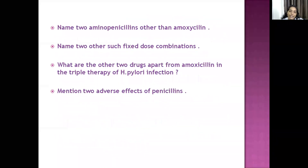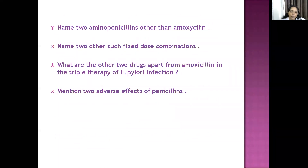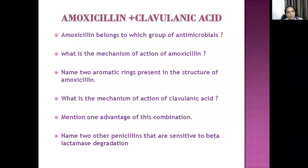Additional homework questions: name two other amino-penicillins apart from amoxicillin; name two other fixed-dose combinations like amoxicillin and clavulanic acid; what are the other two drugs apart from amoxicillin in the triple therapy of H. pylori infection; mention two adverse effects of penicillins. Refer the textbook, write your answers, and submit the PDF through WhatsApp by tomorrow.